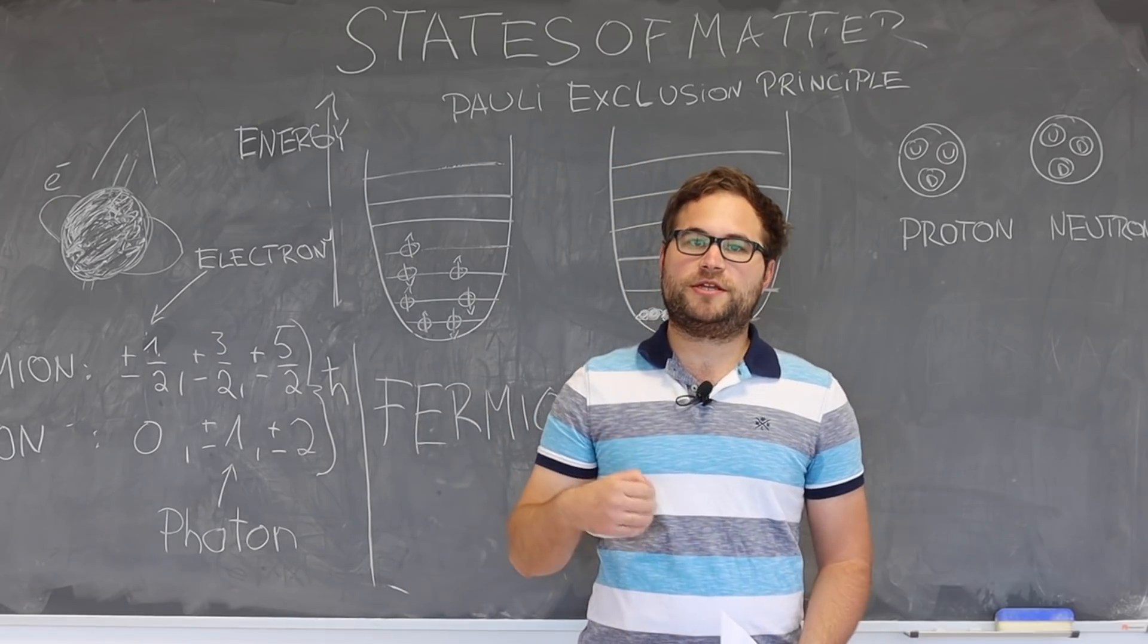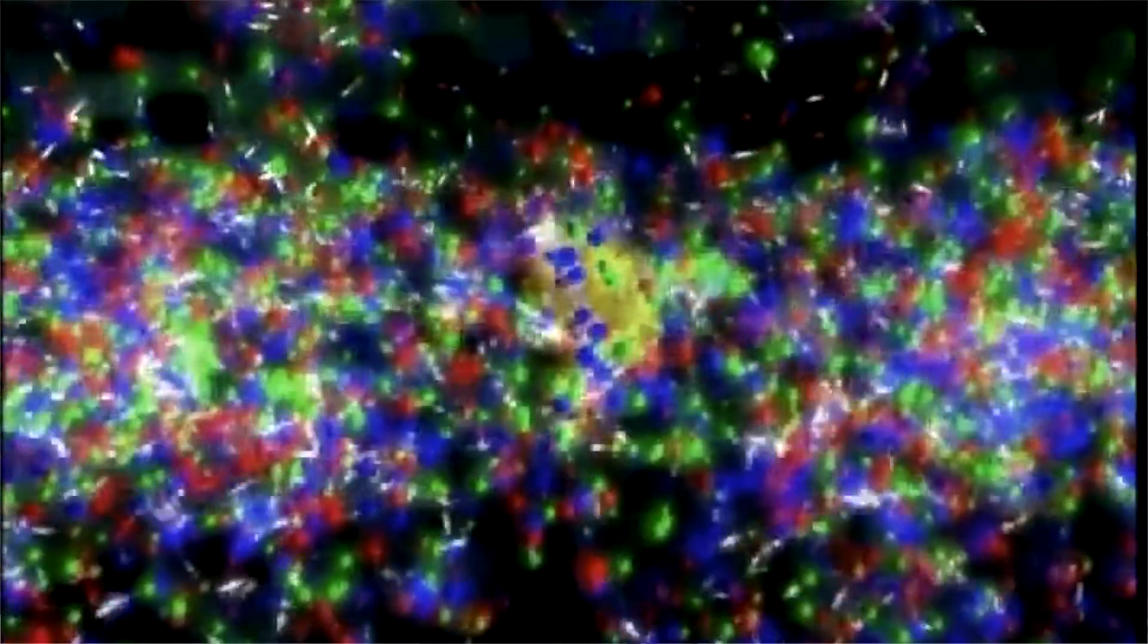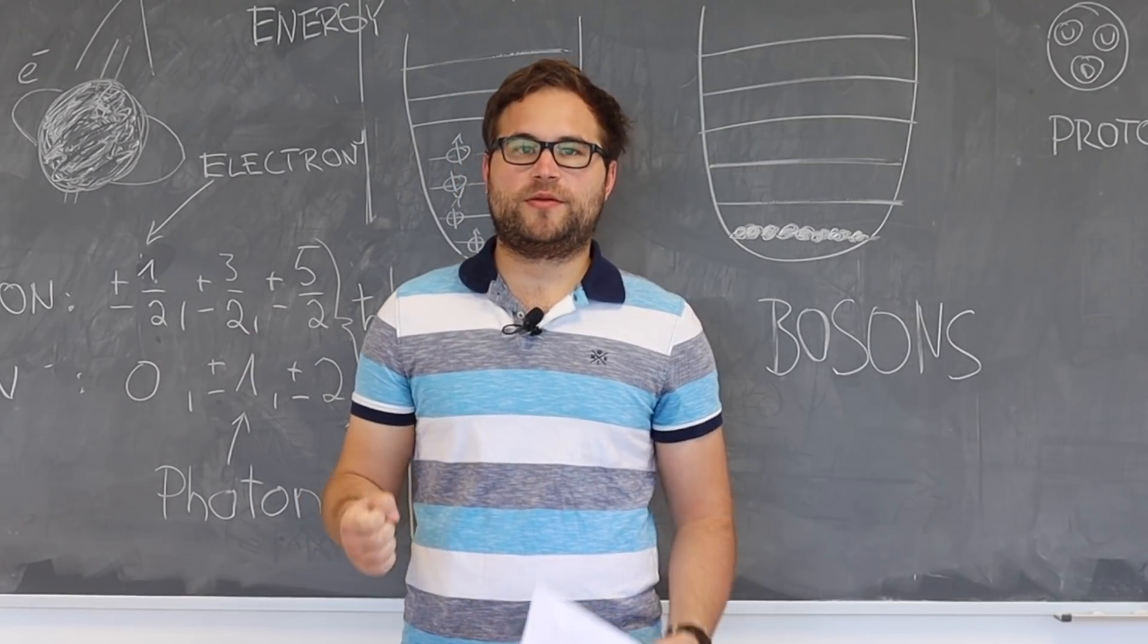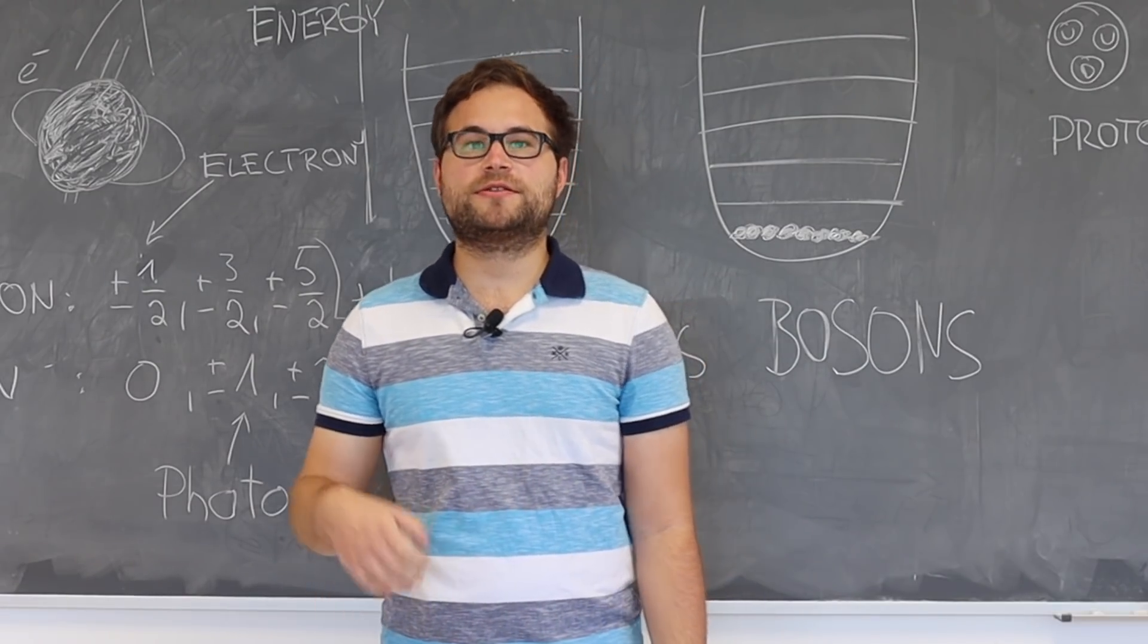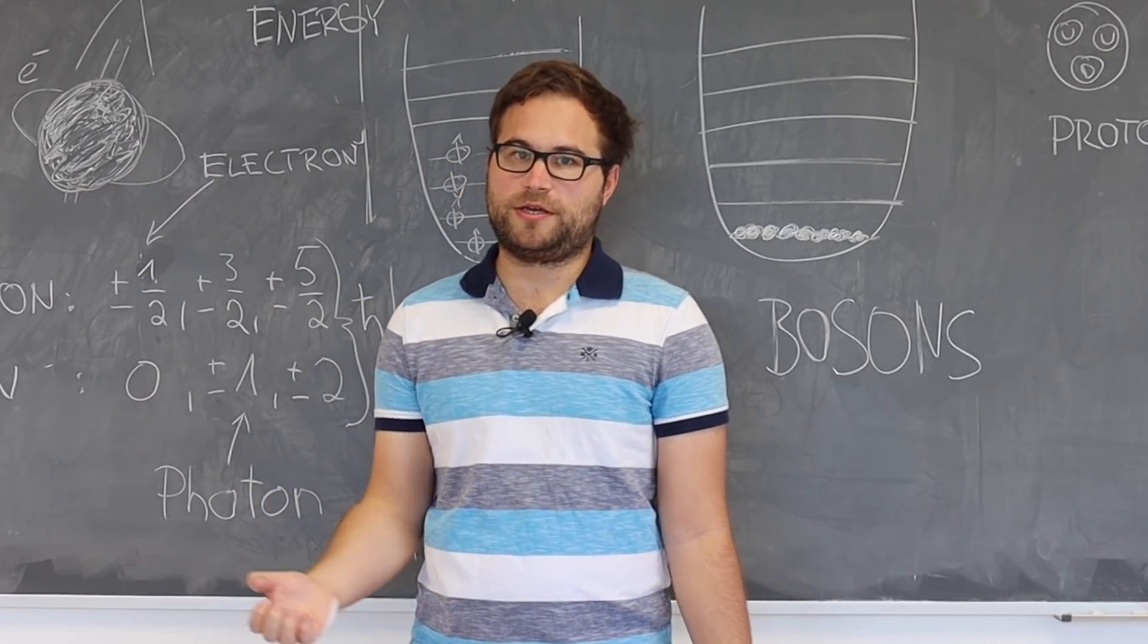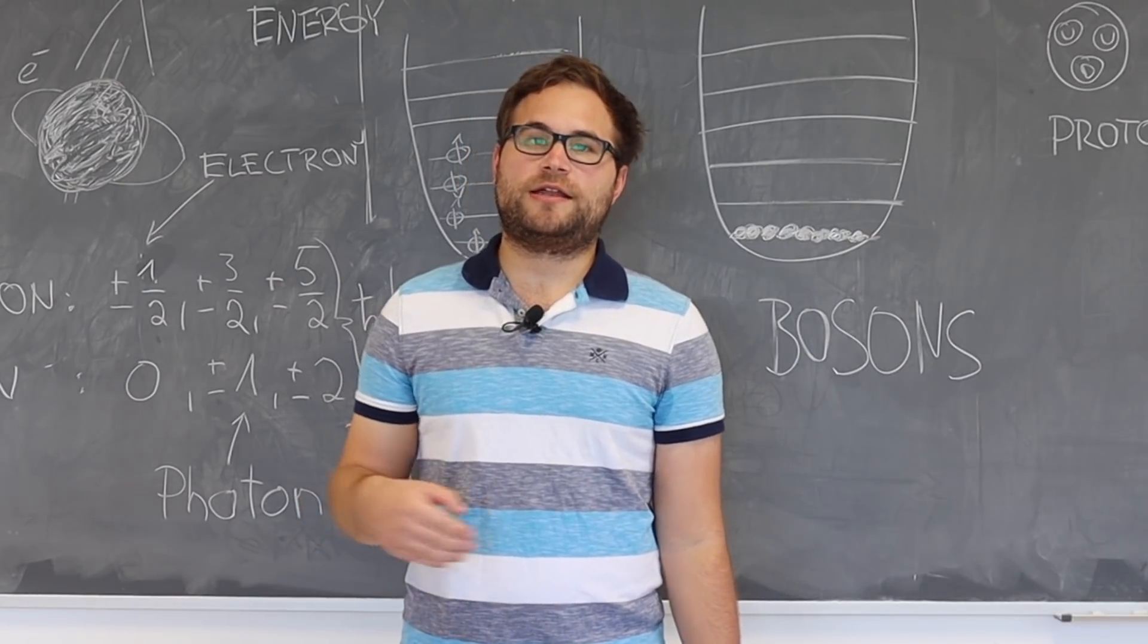A gluon is an elementary particle that mediates the strong force. This is similar to the photon, which mediates the electromagnetic force. Quark-gluon plasma consists of three strong interacting quarks and gluons. Those are usually confined within the nucleus, but they can move freely in the quark-gluon plasma. This is a similar situation to the plasma we talked about in the beginning of the talk.